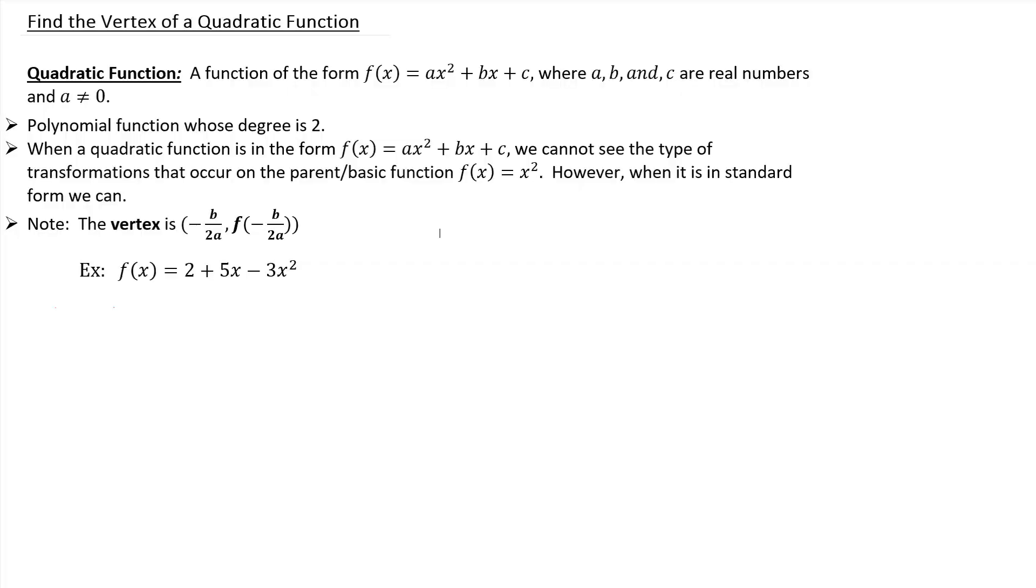The focus of this lesson is on finding the vertex of a quadratic function that is not in standard form. A quadratic function is f of x equals ax squared plus bx plus c, where a, b, and c are real numbers and a cannot be zero. So it's basically a polynomial whose degree is 2.